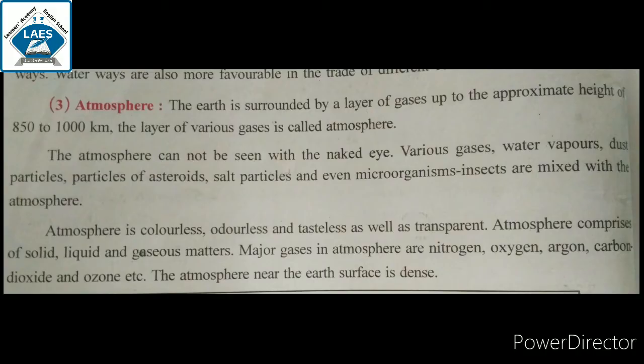Atmosphere: The Earth is surrounded by a layer of gases up to the approximate height of 850 to 1000 km. The layer of various gases is called atmosphere. This gas layer approximately 850 to 1000 km in height, surrounding the Earth, we call it atmosphere.